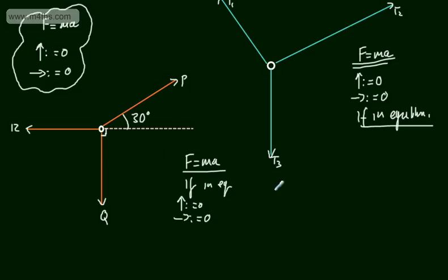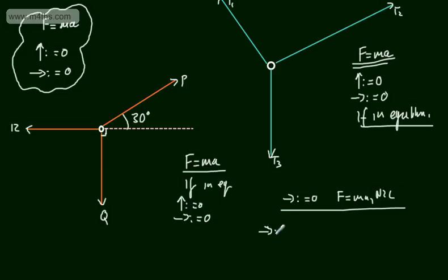Resolving horizontally equals zero using Newton's second law. The horizontal component of force P is P cos 30. Using a right-angle triangle, P is the hypotenuse and the horizontal component is the adjacent. So P cos 30 minus 12 must equal zero.